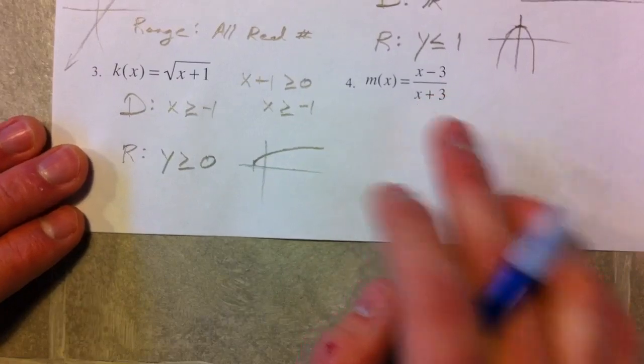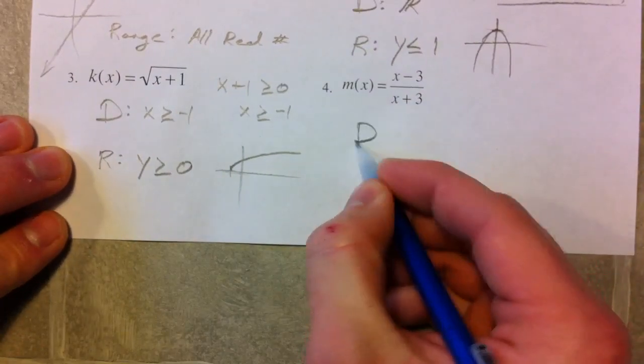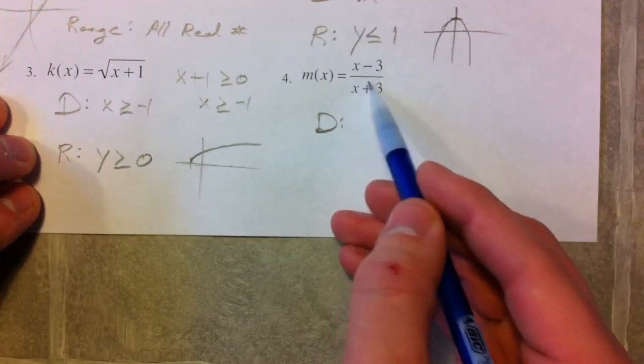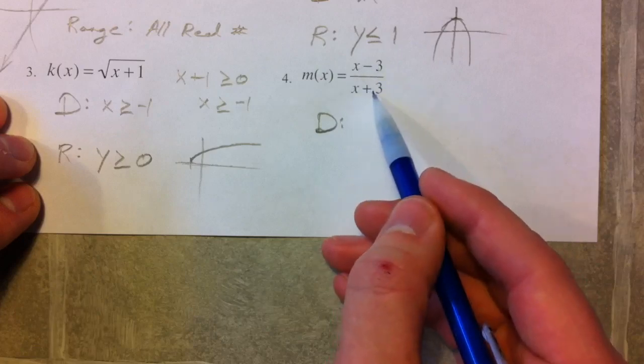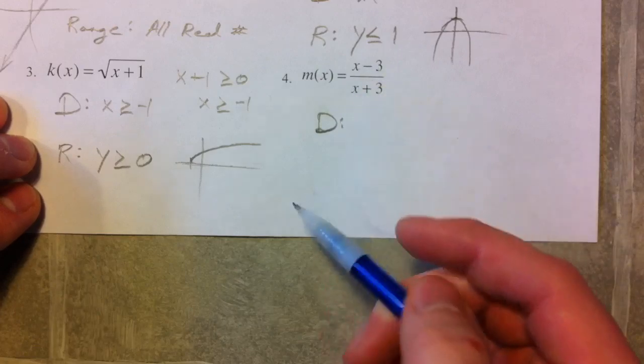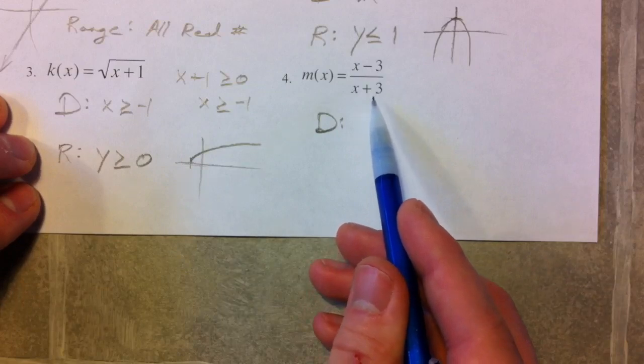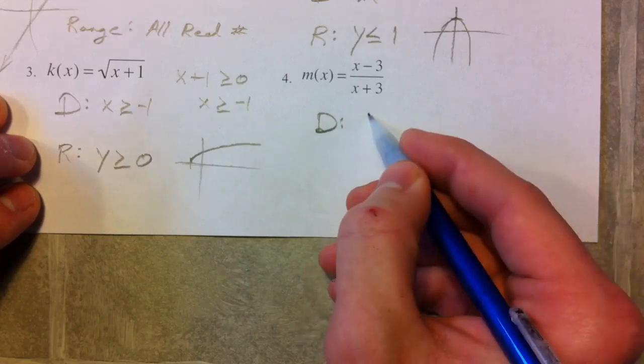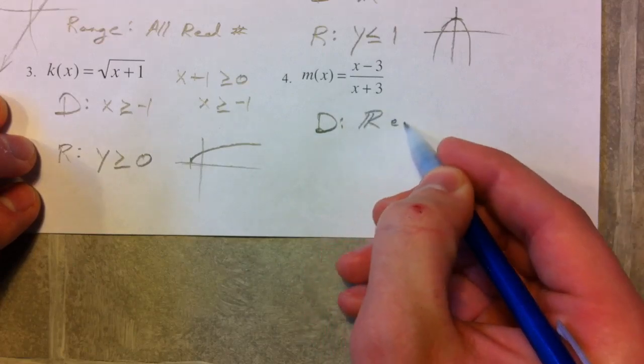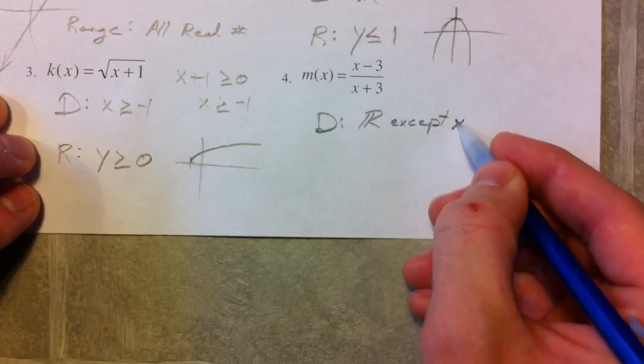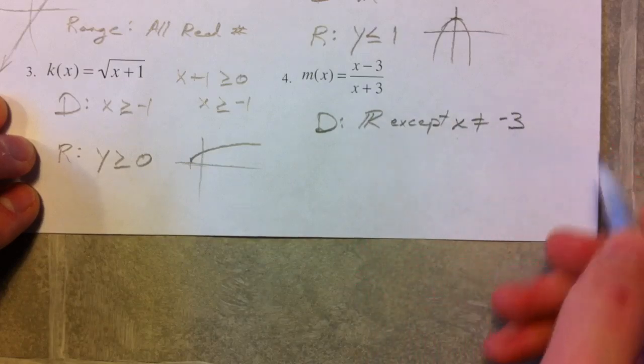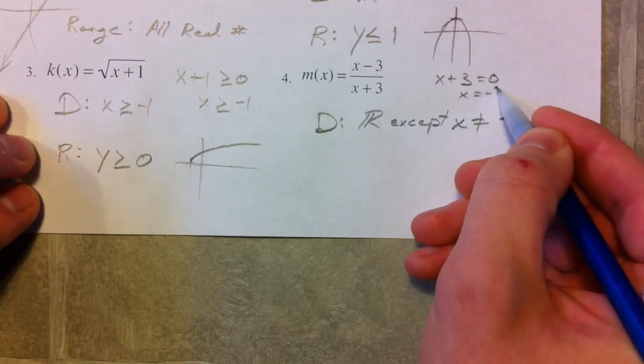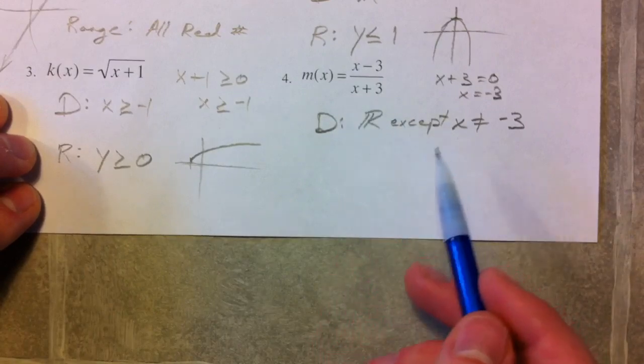I'm going to skip this function as far as the range goes, but I want to talk about the domain. This is called a rational function. Again, rational because it's a ratio. And the only problem with this is we can't divide by 0. It's impossible. And so any time the denominator equals 0, it's not going to be in our domain. So it's going to be all real numbers except x can't equal negative 3. Because when x plus 3 equals 0, if x equals negative 3, we get 0, and we can't divide by 0.